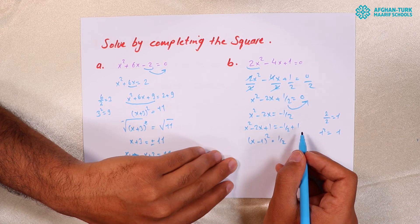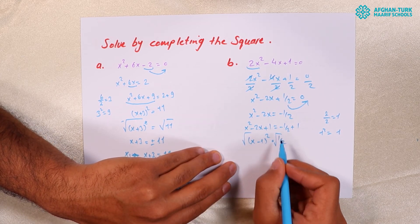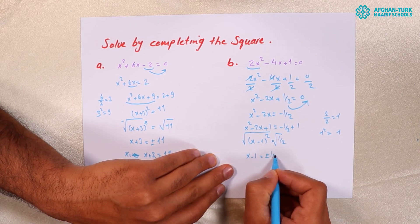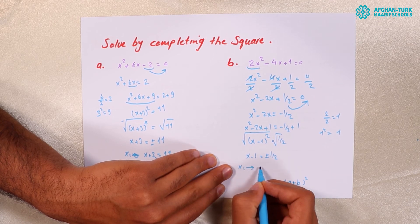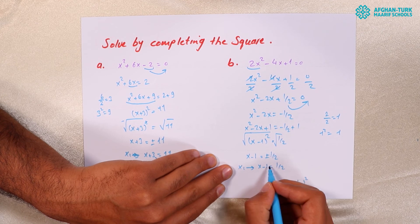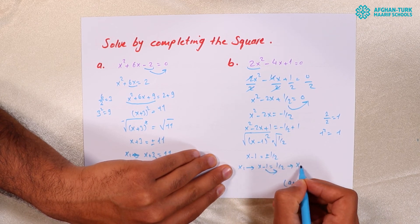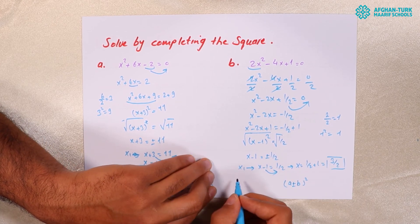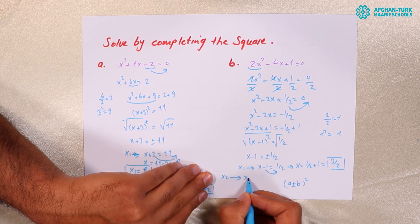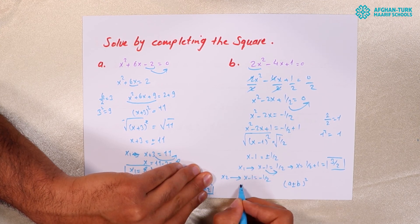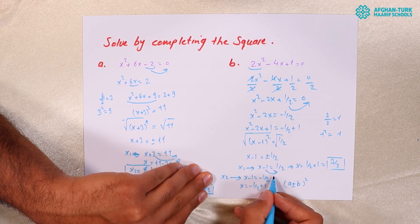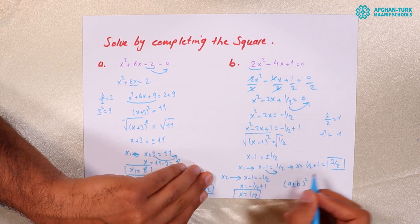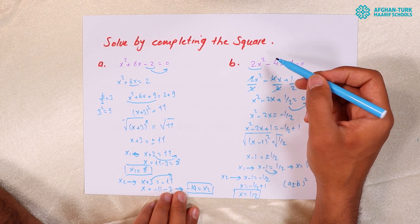Taking the square root of both sides: X minus 1 equals plus or minus the square root of one-half. For X1: X minus 1 equals positive square root of one-half, so X equals one-half plus 1 equals three-halves. X1 is three-halves. For X2: X minus 1 equals negative square root of one-half, so X equals negative one-half plus 1 equals one-half. These are the solutions using the completing the square method.